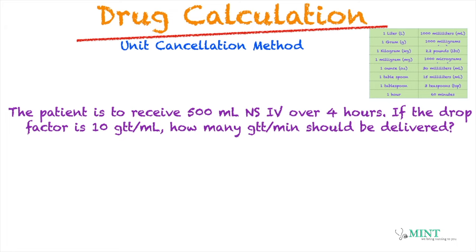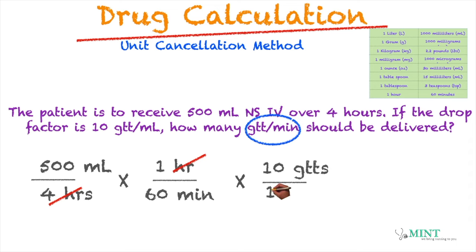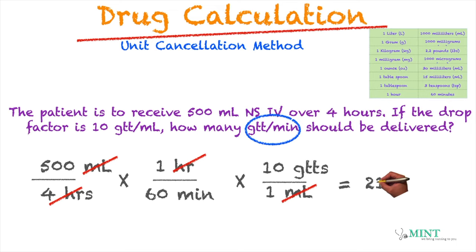Patient is to receive 500 ml NS over 4 hours. If the drop factor is 10 drops per ml, how many drops per minute should be delivered? The problem is looking for drops per minute. We write 500 ml over 4 hours, then convert hours to minutes: 1 hour equals 60 minutes — cancel hours, leaving ml per minute. Then multiply by the drop factor: 10 drops per ml — cancel ml — leaving drops per minute. The math: 500 times 10 divided by 60 times 4 gives us 21 drops per minute.